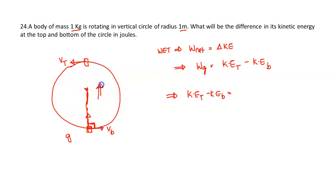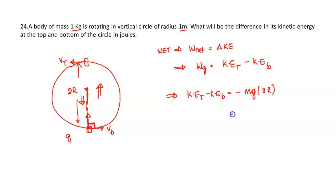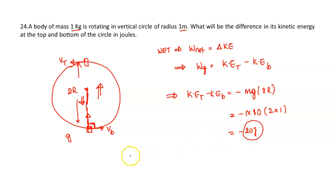The displacement is upward (2r) while gravity acts downward, so work done by gravity is negative: −mg × 2r. Substituting values: m = 1 kg, g = 10, r = 1 m, so work = −1 × 10 × 2 × 1 = −20 joules. The magnitude of the difference in kinetic energies is 20 joules.